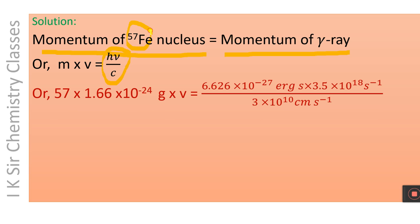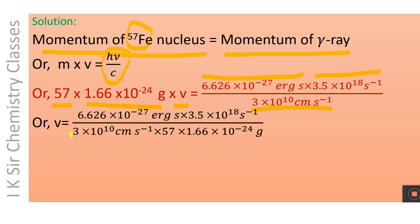The mass of the recoil nucleus is 57 amu, and 1 amu = 1.66×10⁻²⁴ g. Planck's constant in the CGS system is 6.626×10⁻²⁷ erg·s. The frequency of gamma radiation is 3.5×10¹⁸ per second, and the velocity of electromagnetic radiation is 3×10¹⁰ cm/s. Solving the equation, the recoil velocity comes out to be 8.2×10³ cm/s.